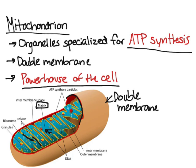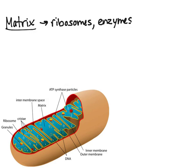The matrix contains ribosomes. You can essentially think of it as the cytoplasm of the mitochondria. The matrix contains ribosomes and enzymes that are used for ATP synthesis, as well as mitochondrial DNA.